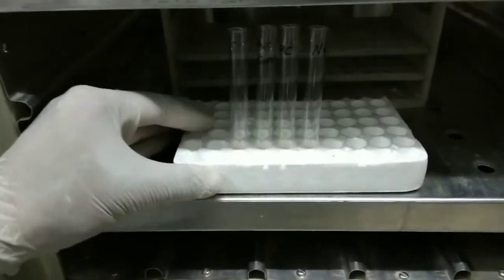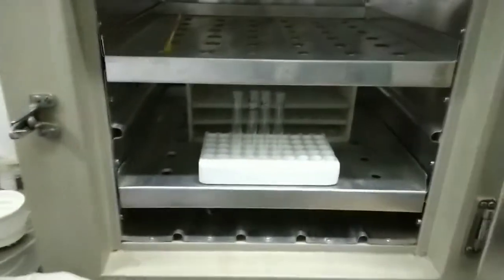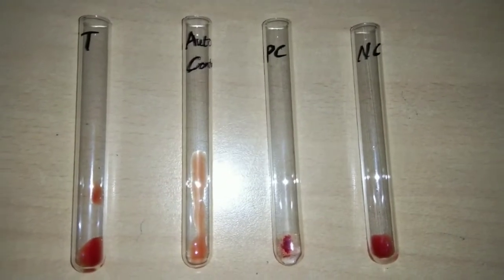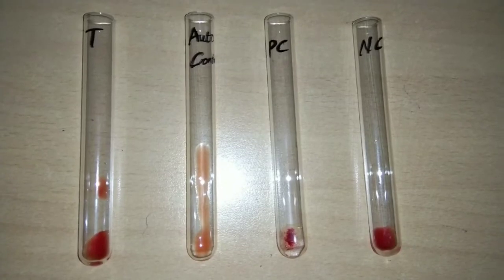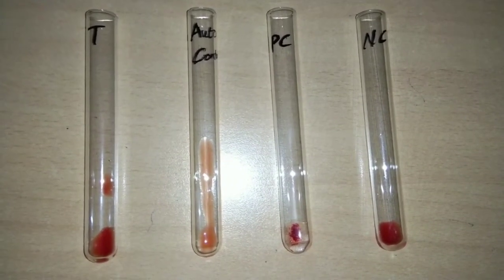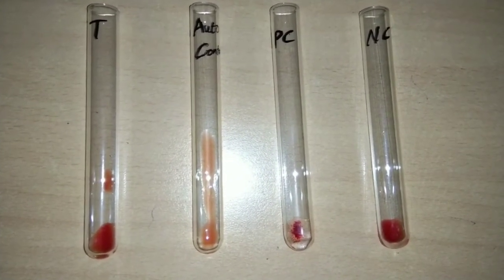Incubate the tubes at 37 degrees centigrade for one hour. After incubation, look for agglutination. There is no agglutination seen in the test tube, auto control, and negative control tube. Agglutination is seen in the positive control tube.